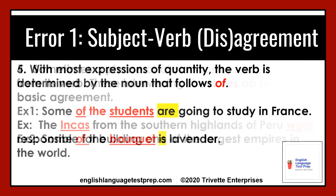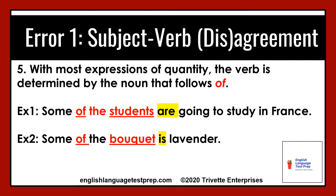Point number five: with most expressions of quantity, the verb is determined by the noun that follows OF. Example one: some of the students are going to study in France. Students, which is the plural form, follows OF and thus we have a plural verb. Example two: some of the bouquet is lavender. Bouquet, which is singular, follows OF and thus we have a singular verb.